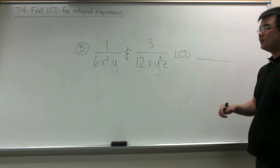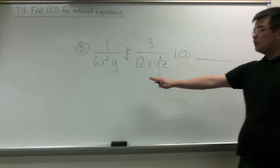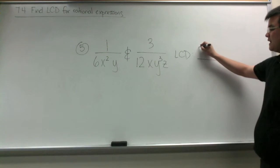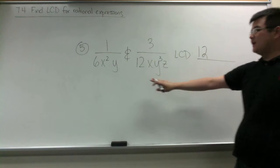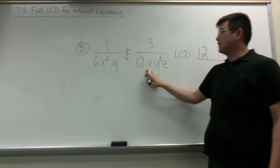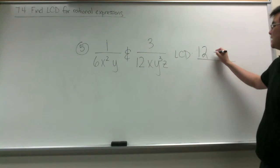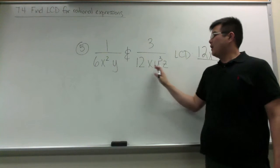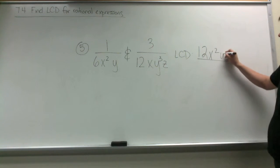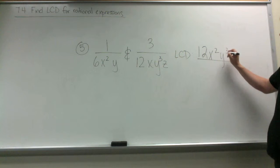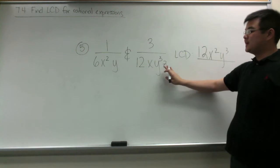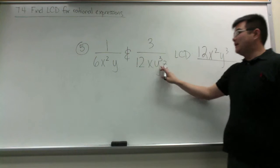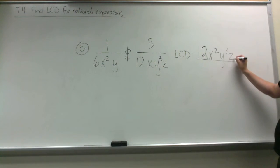In our last example, we are going to compare the two numbers 6 and 12 and find the LCD between them, which is 12. Then for x squared and x, we are going to take the highest exponent, so it is x squared. For y and y cubed, we also take the highest exponent. And because the variable z appears in one denominator but not the other, it automatically goes into our LCD.